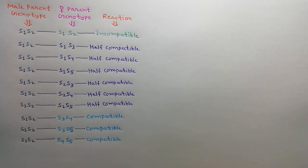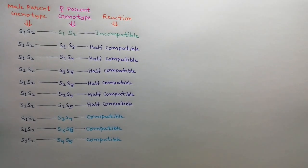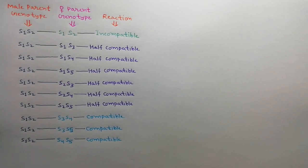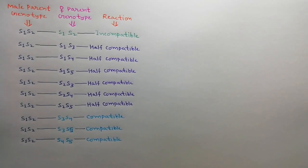In the GSI system, with the male parent genotype always S1S2, the crosses are: S1S2 × S1S2 — completely incompatible; S1S2 × S1S3 — half compatible; S1S2 × S1S4 — half compatible; S1S2 × S2S3 — half compatible; S1S2 × S2S4 — half compatible; S1S2 × S2S5 — half compatible; S1S2 × S3S4 — fully compatible. Half compatibility occurs because only one of the two pollen types (S1 or S2) is rejected.